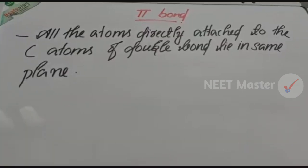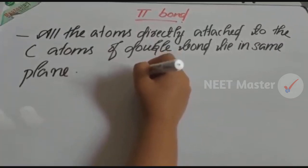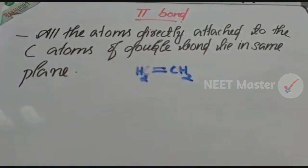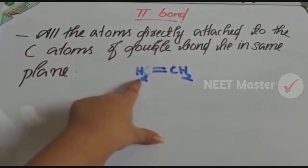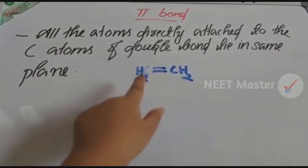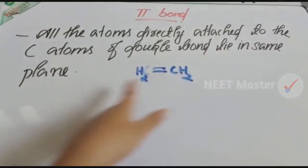One important characteristic of the pi bond or double bond: all atoms directly attached to the carbon atoms of a double bond lie in the same plane. For example, in CH2=CH2, all the atoms attached to the doubly bonded carbons are in the same plane.